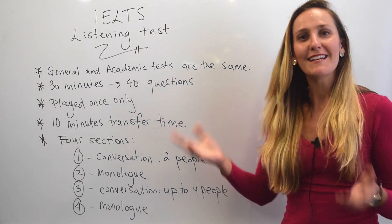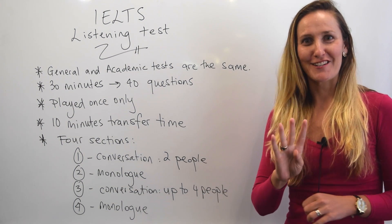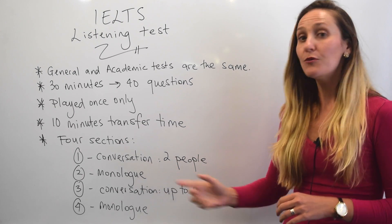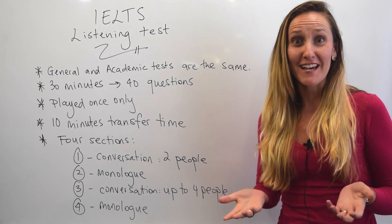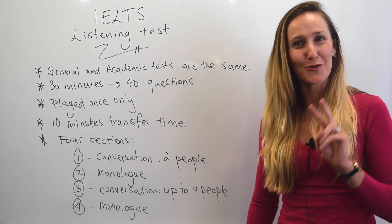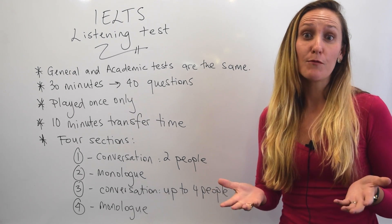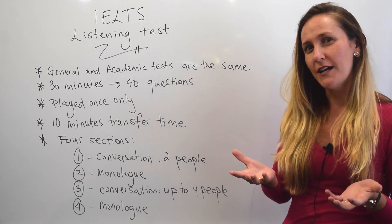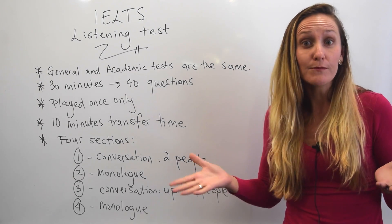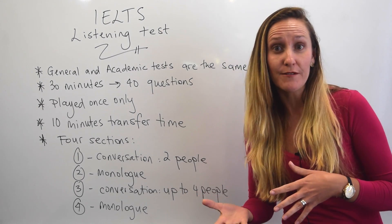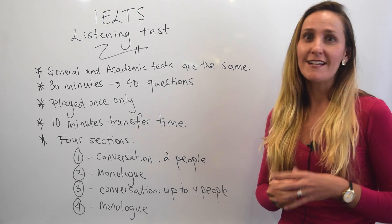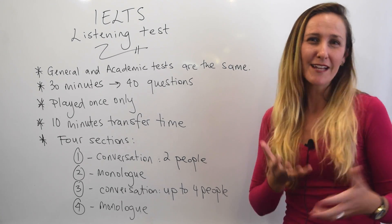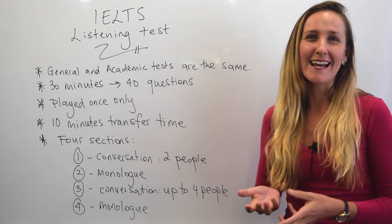The test is made up of four sections. In the first section, you will hear a conversation between two people. The conversation will be about something general — for example, applying for accommodation or attending a course, something that you do in daily life.